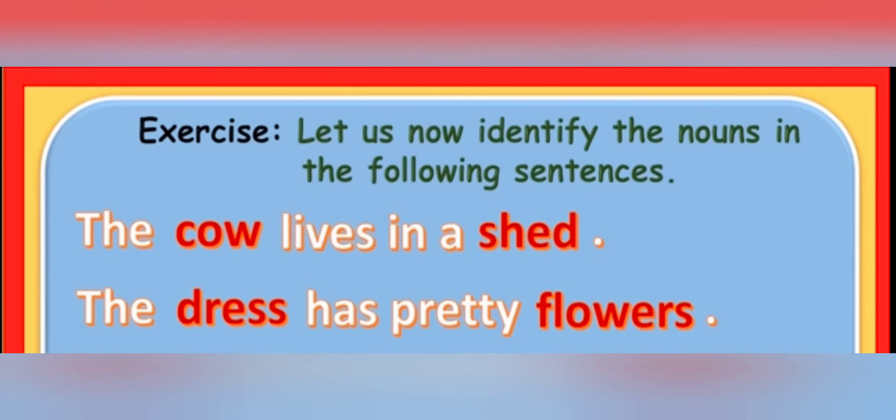Now students, let us do this exercise together. So, we have to identify the nouns in this exercise. Let us look at the first sentence. The cow lives in a shed. Now, here, cow is a name of an animal. So, it is a noun. And it lives in a shed. So, it is a name of a place.